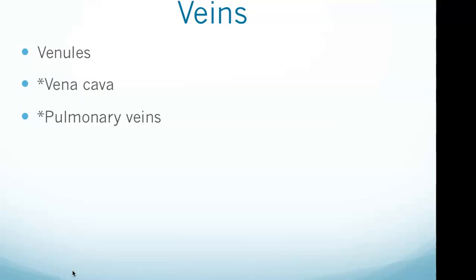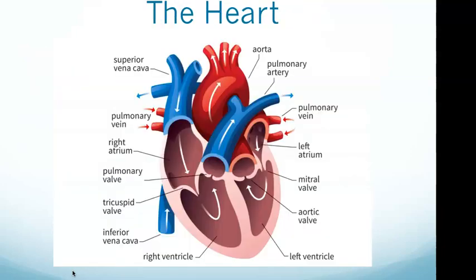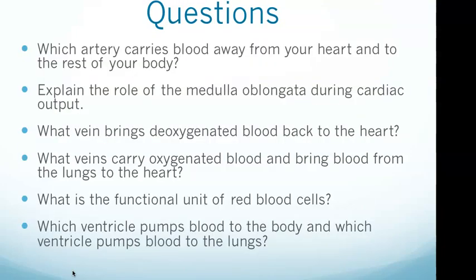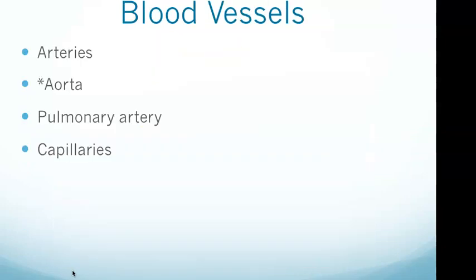Pulmonary veins carry oxygenated blood and bring blood from the lungs to the heart. To recap two key questions: the vena cava brings deoxygenated blood back to the heart, and the pulmonary veins carry oxygenated blood from the lungs to the heart — both important to know.